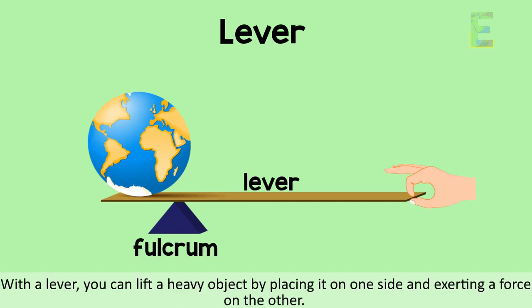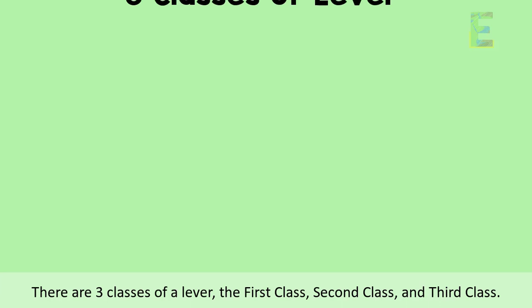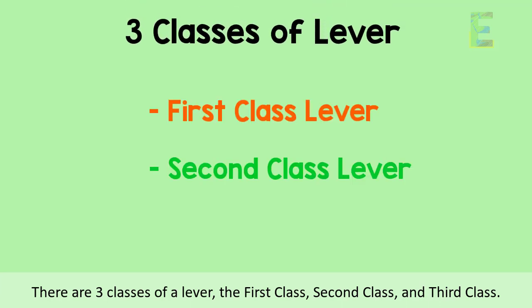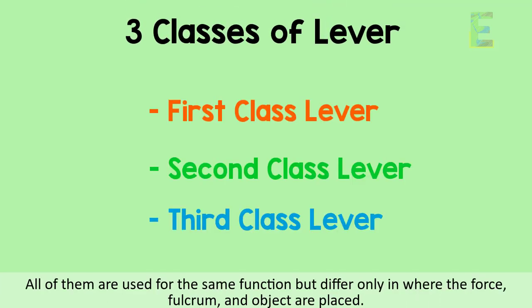And finally, the lever. The lever is composed of a bar that sits on top of a fulcrum. With a lever, you can lift a heavy object by placing it on one side and exerting a force on the other. There are three classes of a lever: first class, second class, and third class. All of them are used for the same function but differ only in where the force, fulcrum, and object are placed.